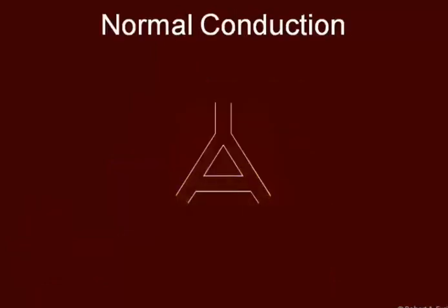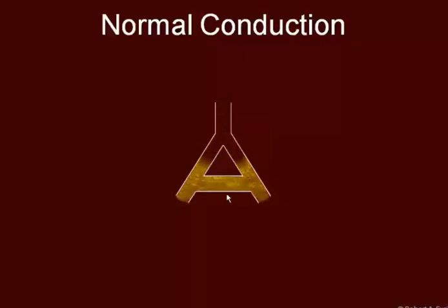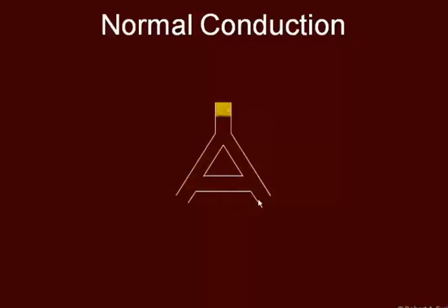Re-entry tachycardias can occur anywhere there's a branching circuit. In this example, this could be the left and right bundle branches, or Purkinje branch work. In a normal circuit, the signal comes down, passes through both branches, crosses over, and collides somewhere in the middle. Because each side is in its refractory period when they crash, the signal cannot cross.